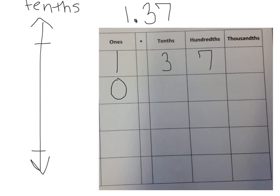Okay, I know that 1 is 10 tenths plus the 3 tenths I already have for a total of 13 tenths. And there's still 7 hundredths.